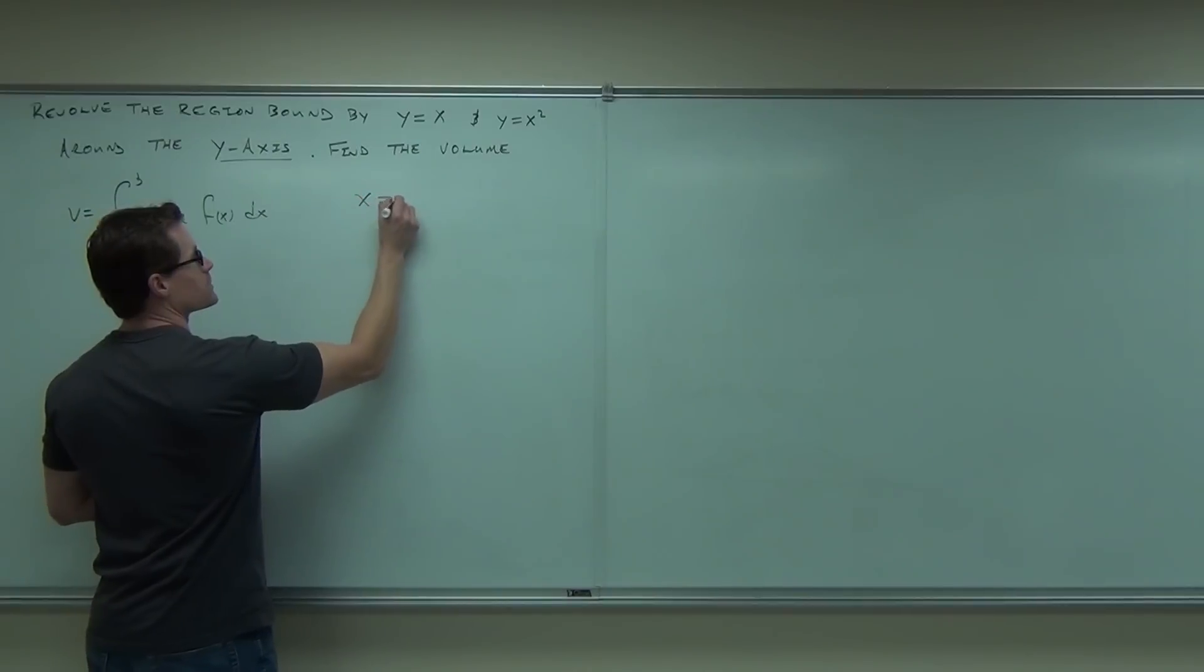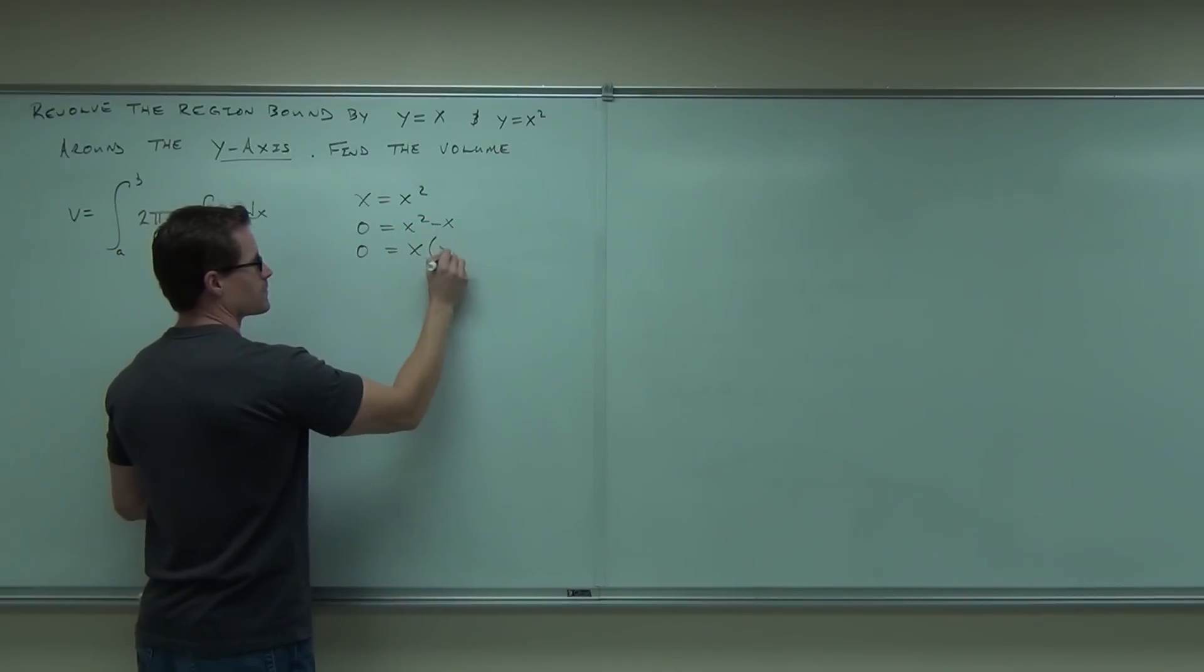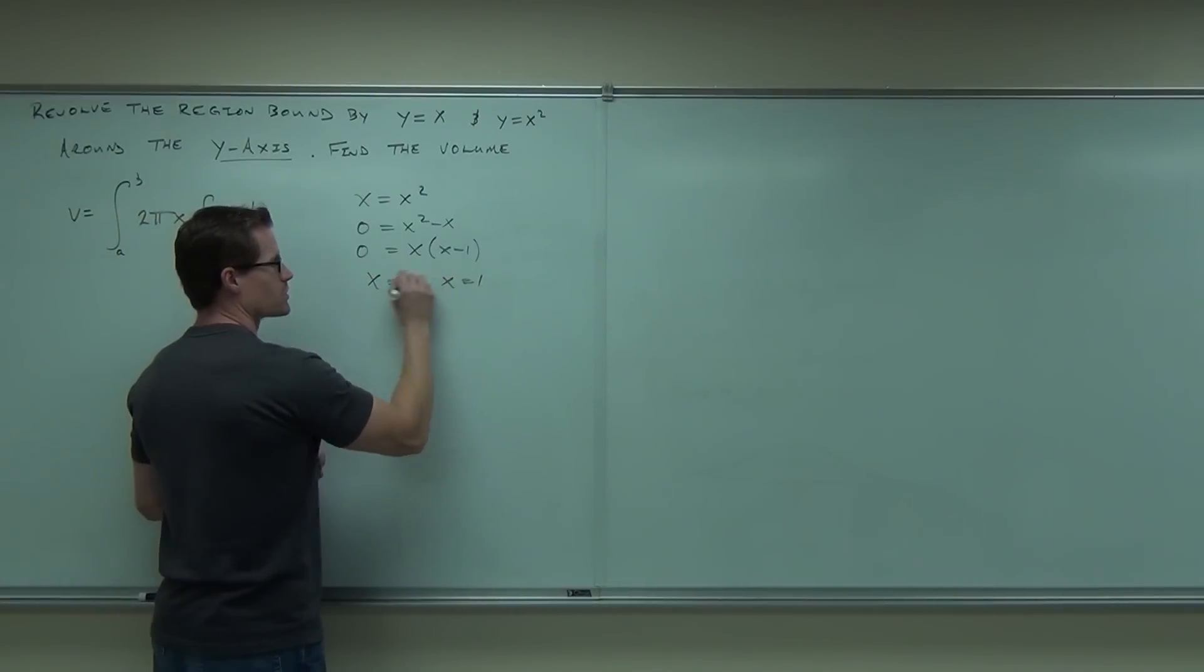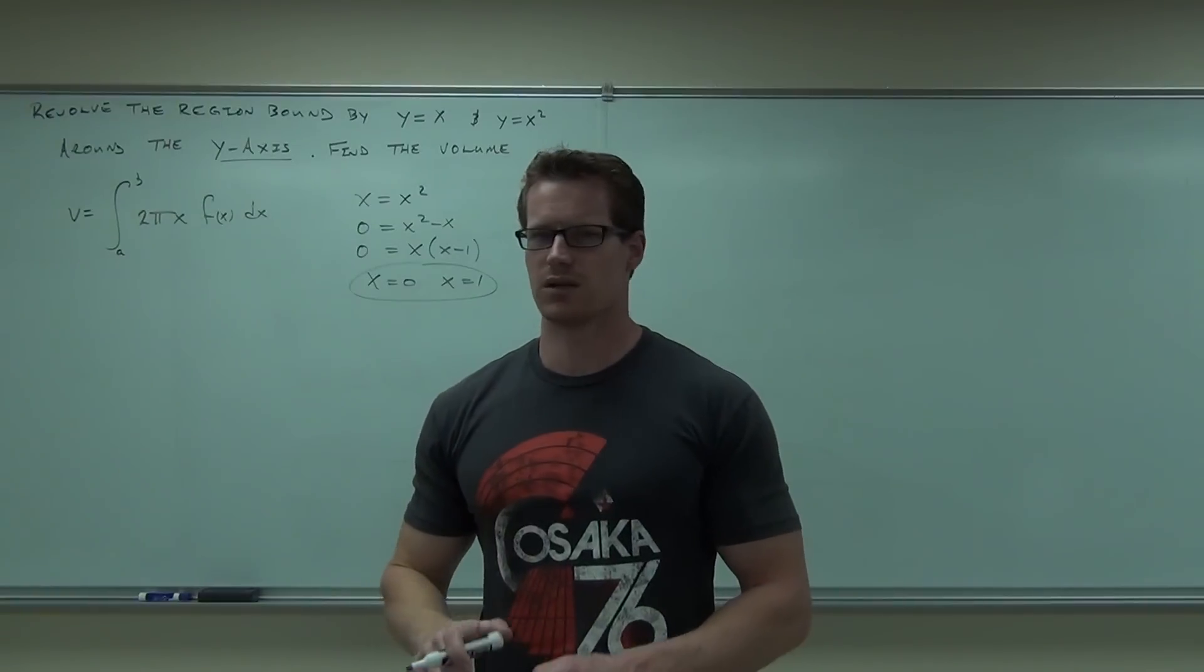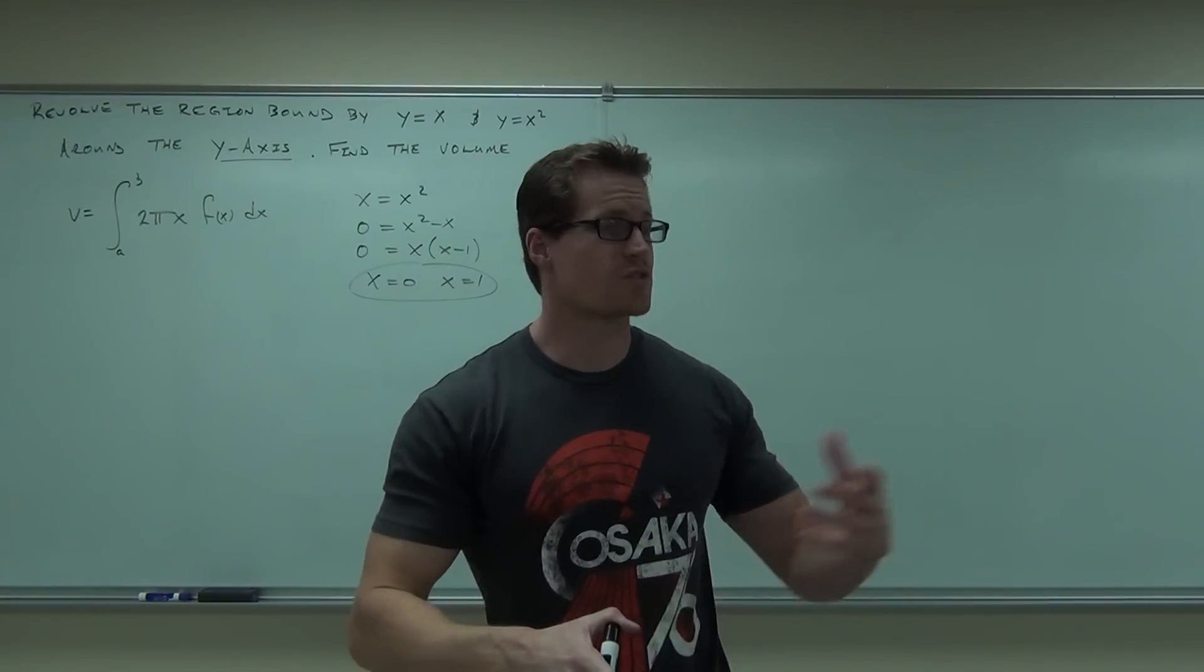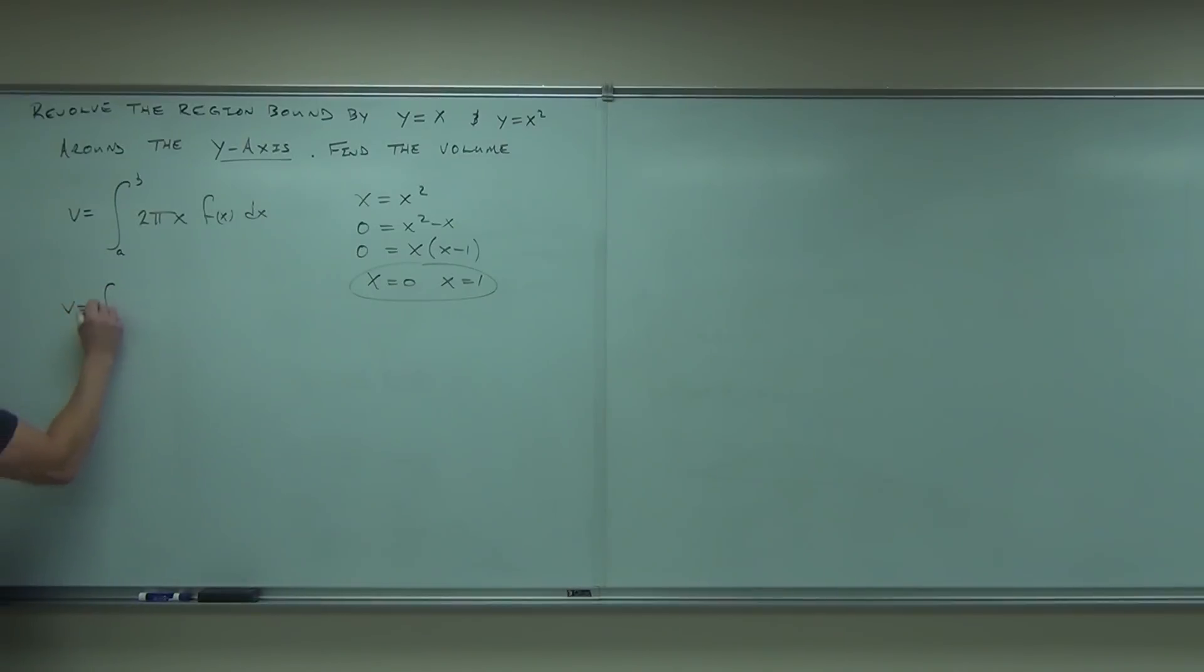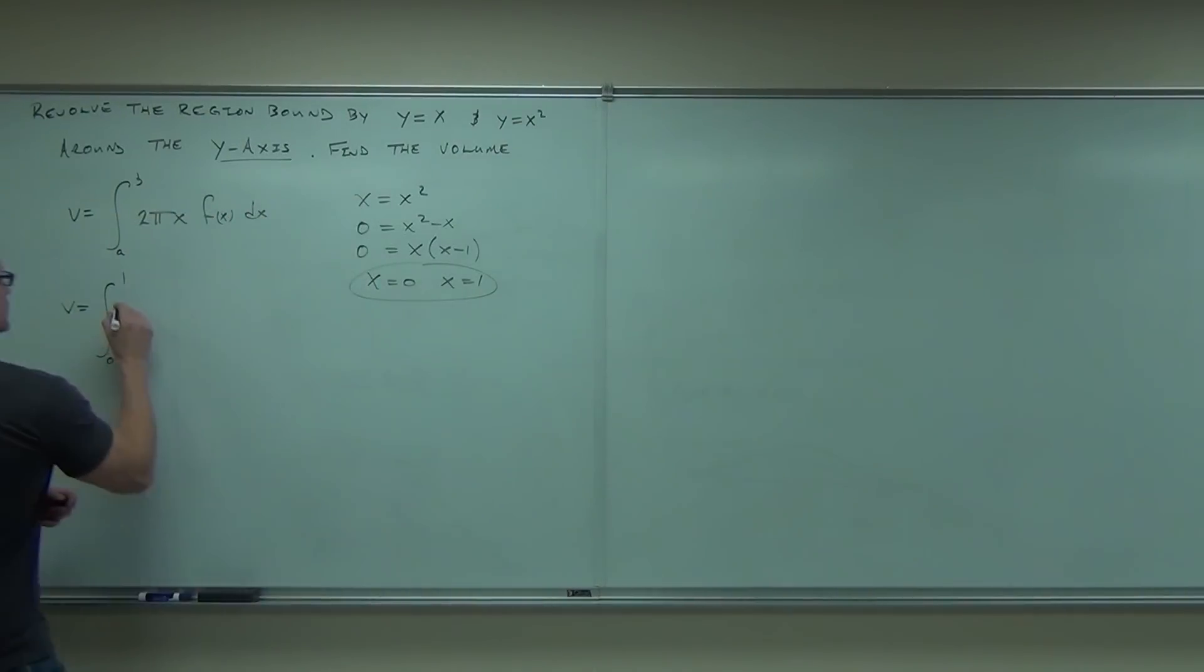We can solve it and what we find is that x equals zero or x equals one. You okay with the zero or one? So we just found our bounds of integration. We're going from zero to one. Very good. Does the 2π ever change for us? We're going to get a 2π. Does the x ever change for us?